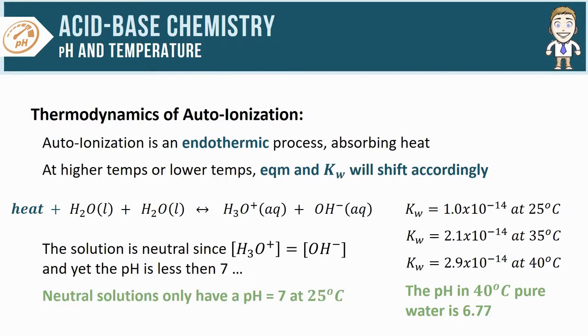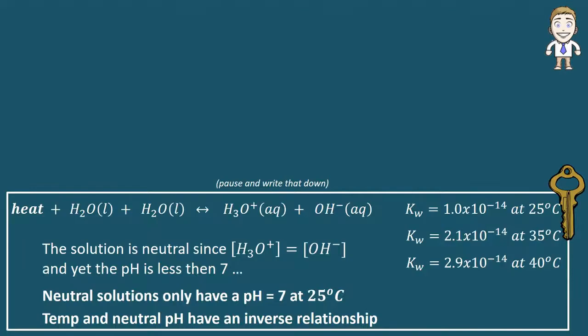One: neutral solutions will only have a pH of exactly 7 when the temp is 25°C. And two: temperature and neutral pH have an inverse relationship. Here at higher temps the neutral pH is dropping, and the opposite would be true at lower temperatures as well.